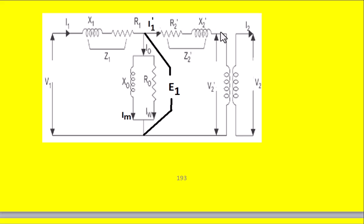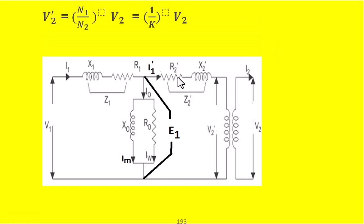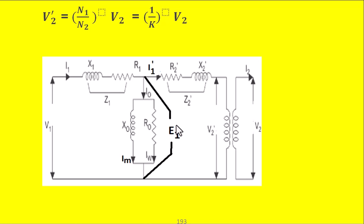Once R2 dash and X2 dash are calculated, they can be transferred from the secondary side to the primary side. Here R1 and X1 are the primary winding resistance and inductive reactance, while the secondary winding resistance referred to the primary becomes R2 dash and the reactance becomes X2 dash. These are connected in series on the primary side, while R0 and X0 remain present in the circuit with the voltage across the no-load components being E1.